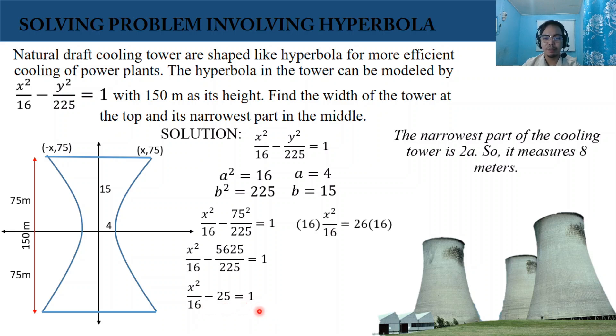Negative 25 is transposed to the other side, so it's going to be positive. We have 1 plus 25 is 26. Then we're going to multiply both sides by 16 to isolate x squared.